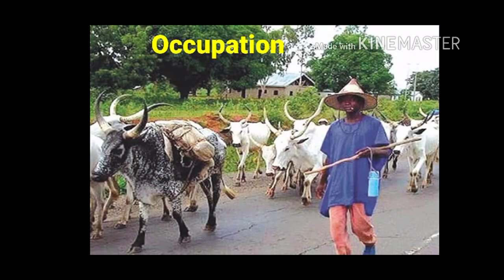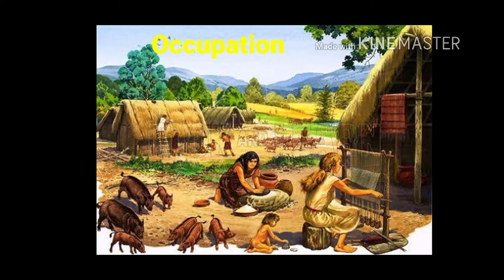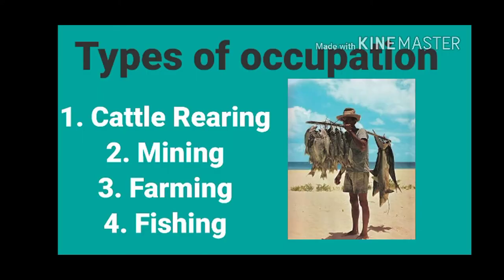Now, occupation. Musa is a young boy who lives in southern Kaduna. He is a Fulani man. Every morning before he goes to school, he helps his father to milk their cows. So Musa's father is a cattle rearer. From the sale of cows, Musa's father is able to send Musa and his sister to school and provide for his family through this occupation.